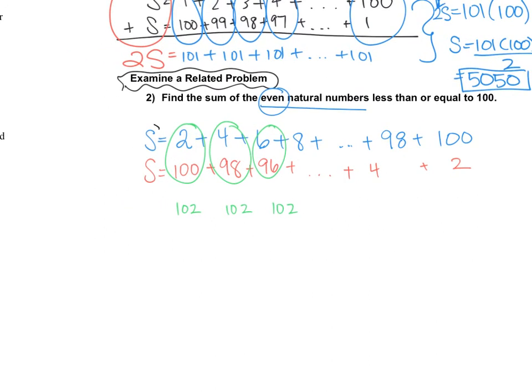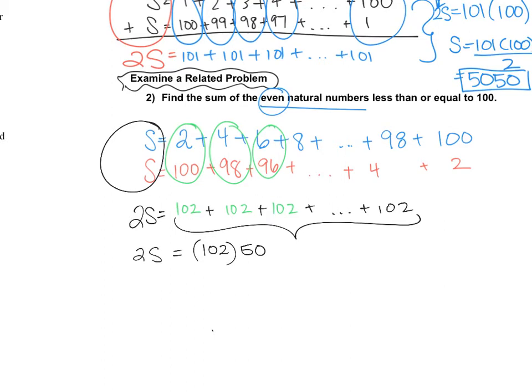Similar to the last problem, we could say, okay, well, if we add up two of those sums, it's going to equal 102 plus 102 plus 102, a whole bunch of 102s. Now, remember, this time we're adding only the even numbers. So that's half of the numbers between 1 and 100. Last time we said 101 happened 100 times. So now we're saying 102 is going to happen 50 times. And that's the total of two of those sums. So our sum is really going to be 102 times 50 divided by 2, which will equal 2,550.